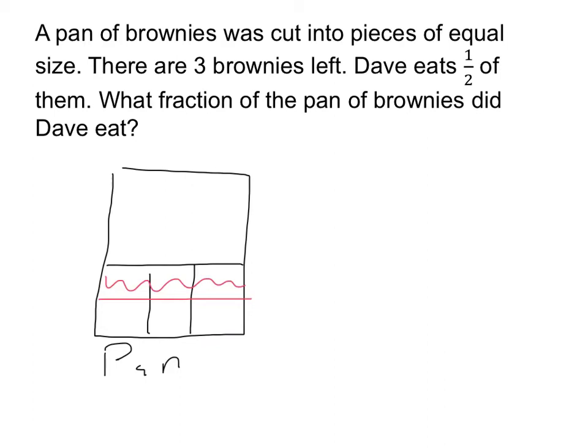In other words, we don't know what was up here — we don't know how many brownies were there before. We just don't have enough information to solve this problem. We know that he ate one and a half brownies, but we don't know what fraction of the entire pan this is. There just isn't enough information to solve.